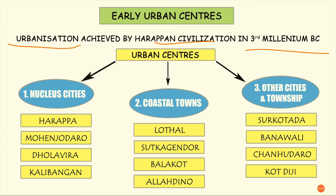The urban centers of the Harappan civilization are divided into three types: nuclear cities, coastal towns, and other cities and townships. Nuclear cities are those cities situated within the land, meaning they are surrounded by land on all sides. Some examples of nuclear cities are Harappa, Mohenjo-daro, Dholavira, and Kalibangan.